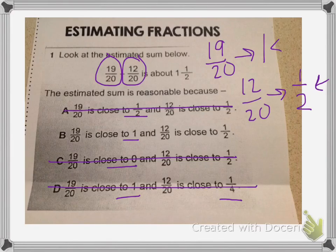So the right answer would be B. 19 twentieths is close to 1 and 12 twentieths is close to 1 half. So therefore, I can say that 19 twentieths plus 12 twentieths is close to 1 and 1 half.